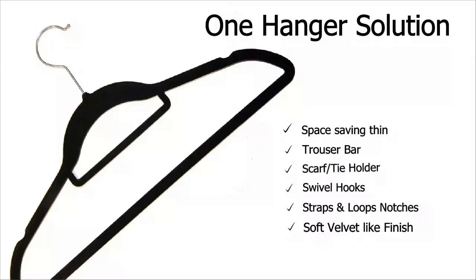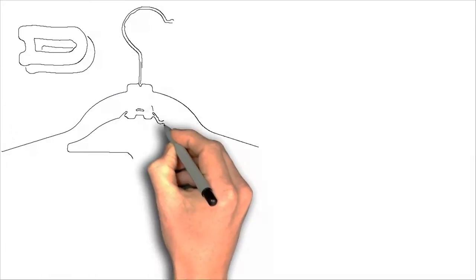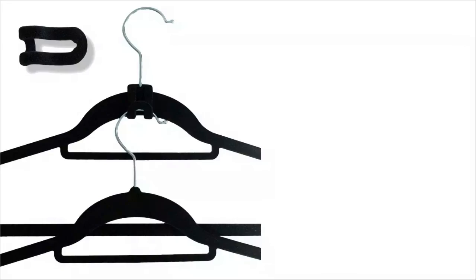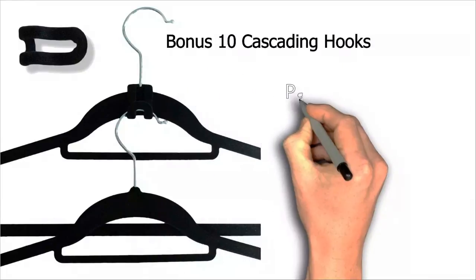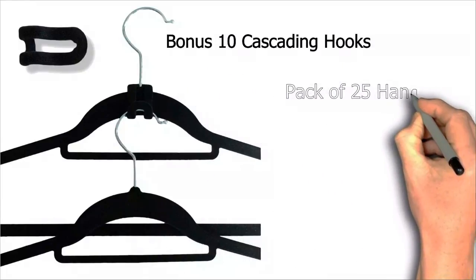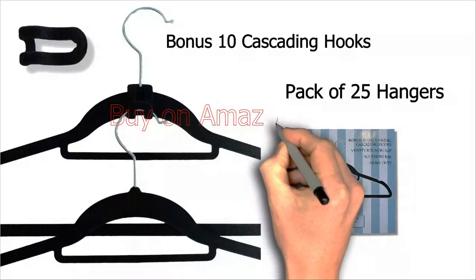And what makes them even more of a space-saving solution is our bonus 10 cascading hooks. Go vertical to increase your closet capacity, especially suitable for shirts and blouses. They are included in our fabulous pack of 25 velvet-like hangers. So why wait? Get your Amanda Marie hangers today.